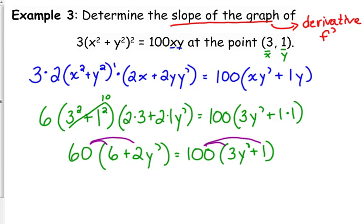First of all, you can kind of cancel one of those zeros, dividing by 10. And then 6 and 10 have 2 in common, so divide both of those by 2. So it gives you 3 and 5. So just distribute the 3. That makes life a lot easier. 18 plus 6y prime is equal to 15y prime plus 5.